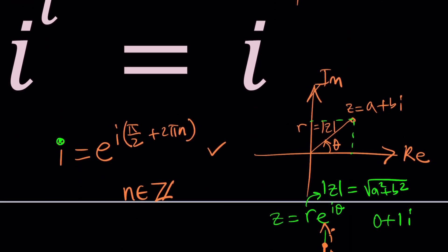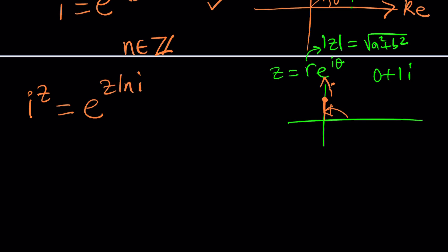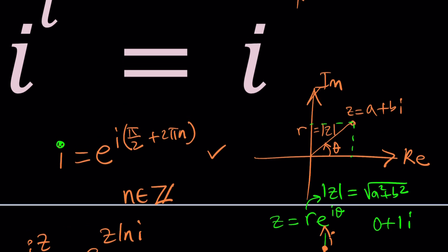So what about i to the power Z though? That's something I need to handle. We have an exponential formula for that. Euler said i to the power Z can be written as e to the power Z ln i. This can be substituted for i to the power Z, and we already know how to write i. So hopefully we can take that and turn it into a nicer, better equation. Let's give it a try.